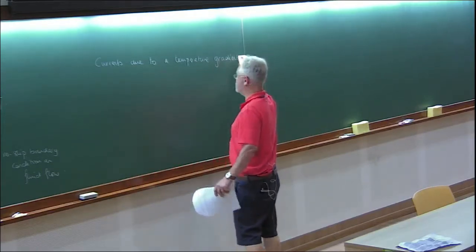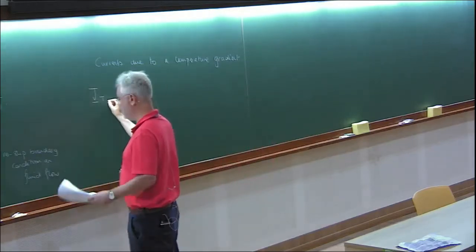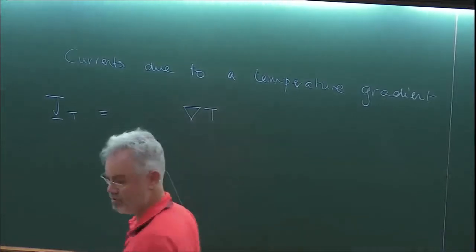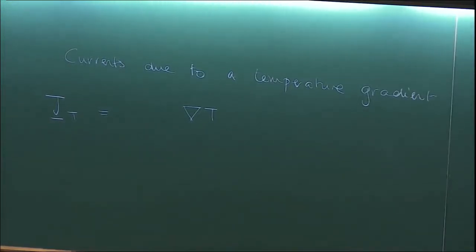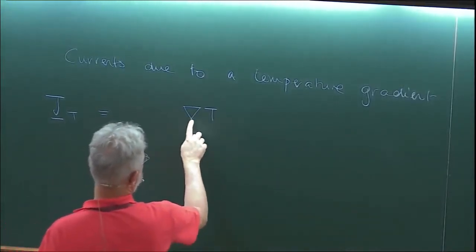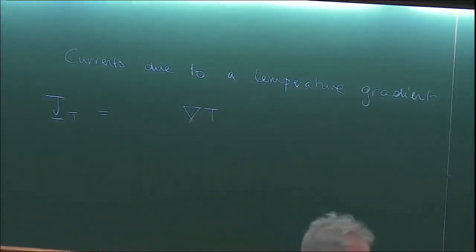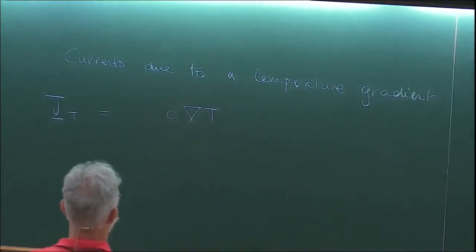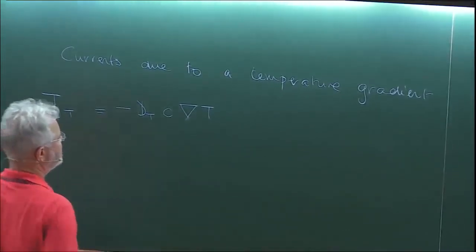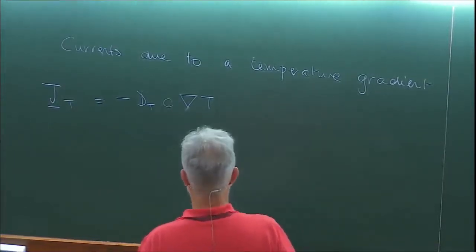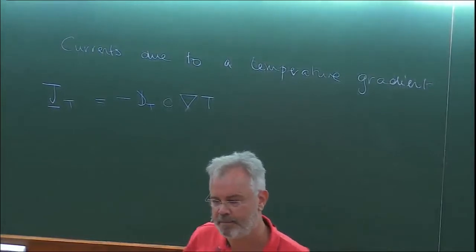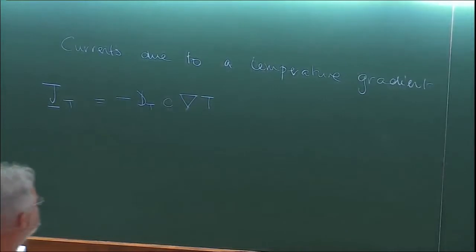There is something called the thermal current J_T. By linear response, if there are no gradients in temperature there is no current. With a temperature gradient, the current will be proportional to the concentration of particles: J_T = -D_T c grad(T). This D_T is sometimes called the Soret coefficient, and it can be positive or negative depending on the relative size of the particles with respect to the solvent.